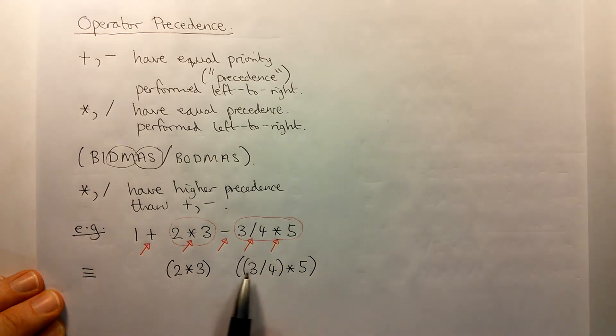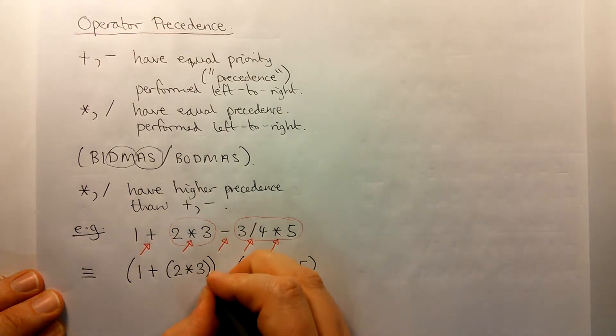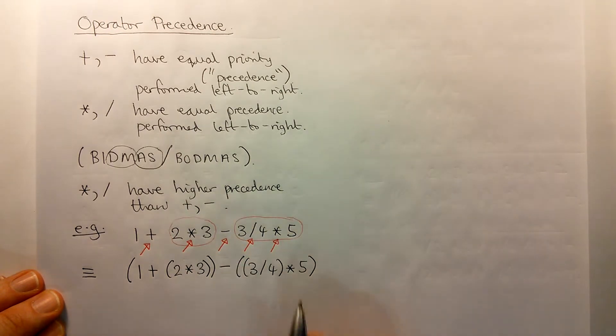Finally, we have two expressions here that are combined with an addition and subtraction. They have equal priority, and so should go left to right. So we perform the addition first, and then we perform the subtraction.